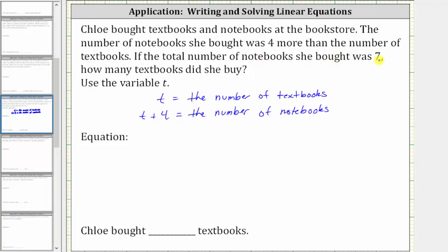She bought a total of seven notebooks, which gives us the equation t plus four equals seven. Now if we solve this equation for t, we can determine the number of textbooks.